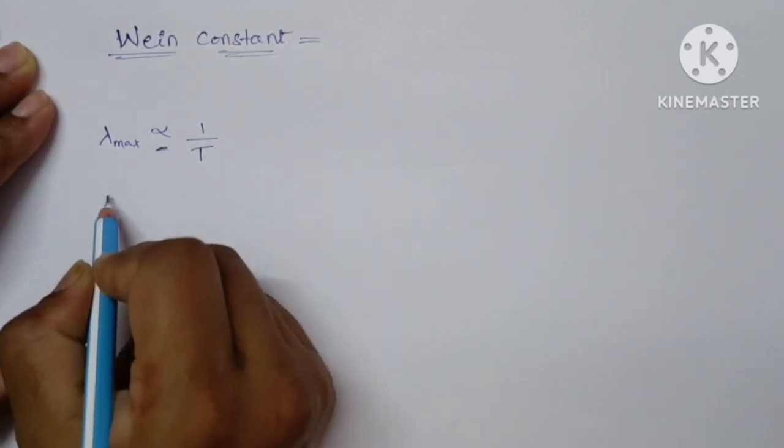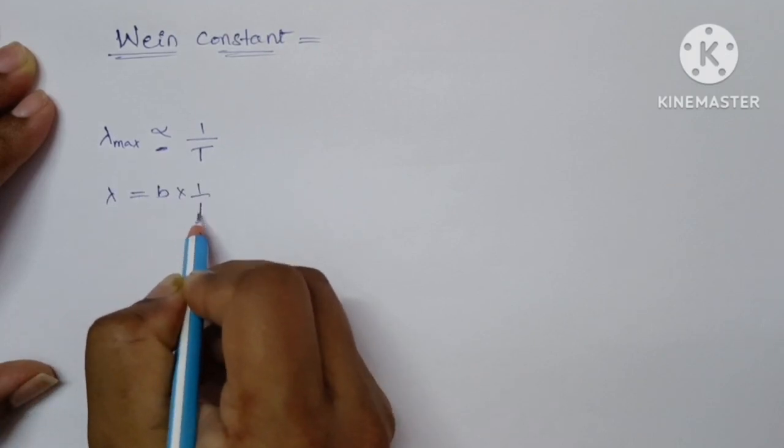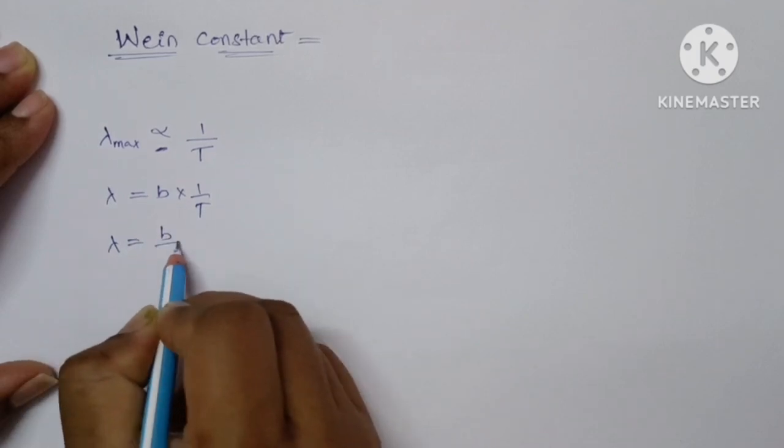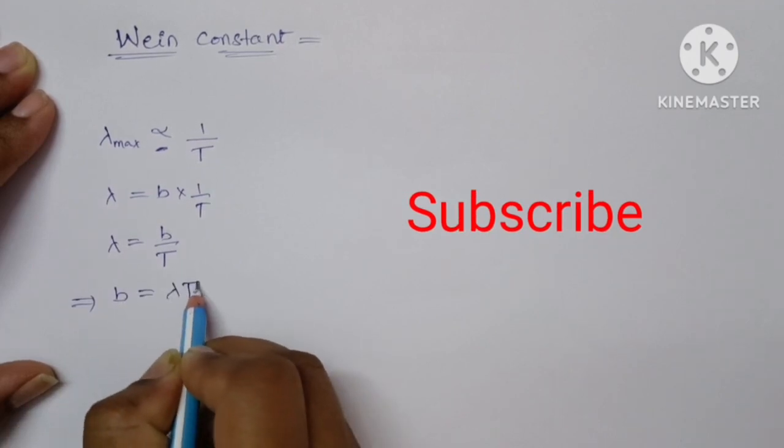So to remove this proportionality, we will keep a proportionality constant B into 1 by T. This we can write it as lambda is equal to B upon T. So this can be written as B is equal to lambda T.